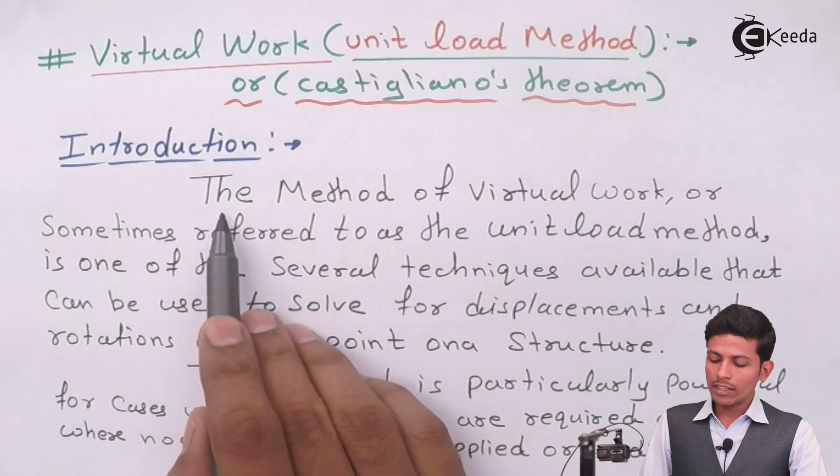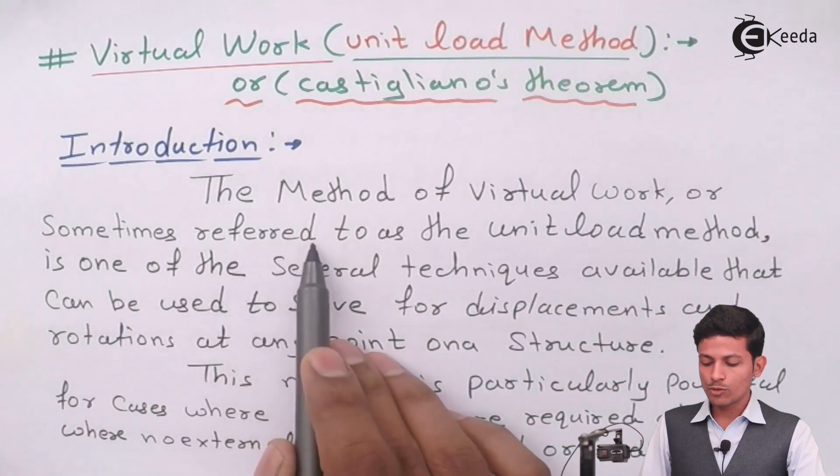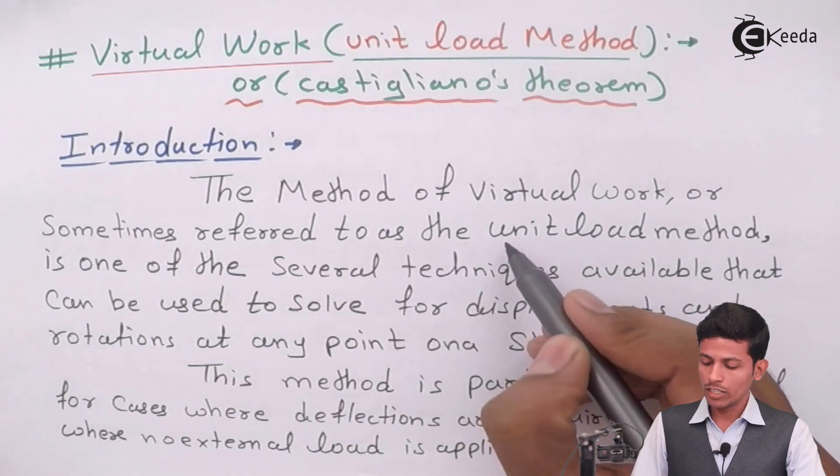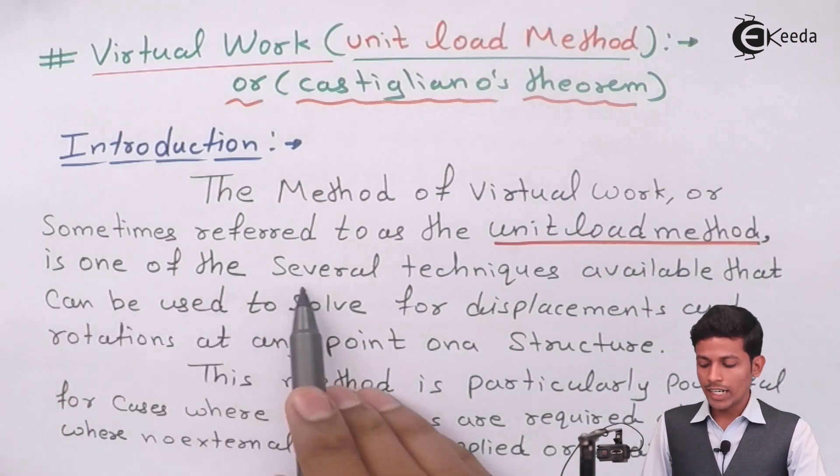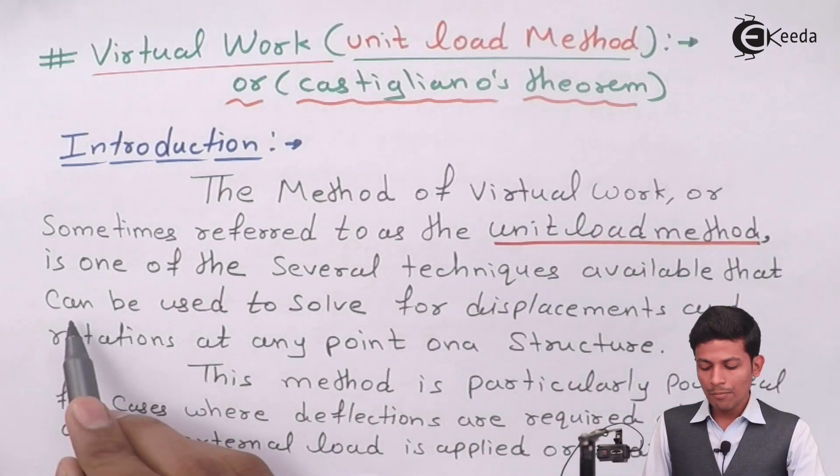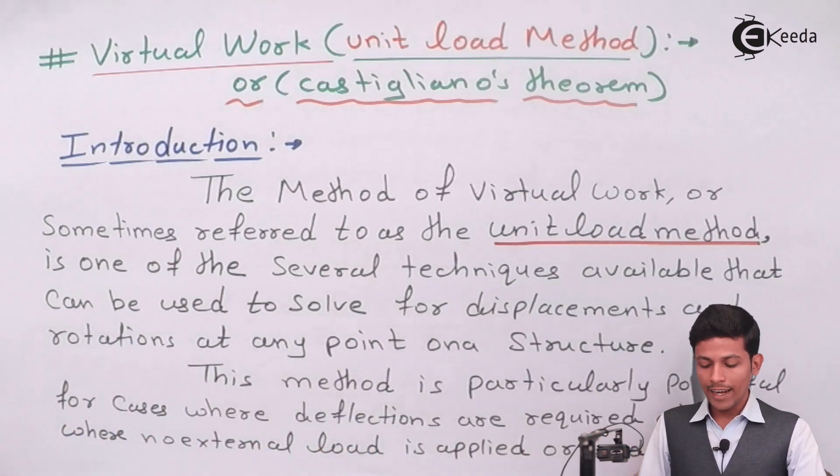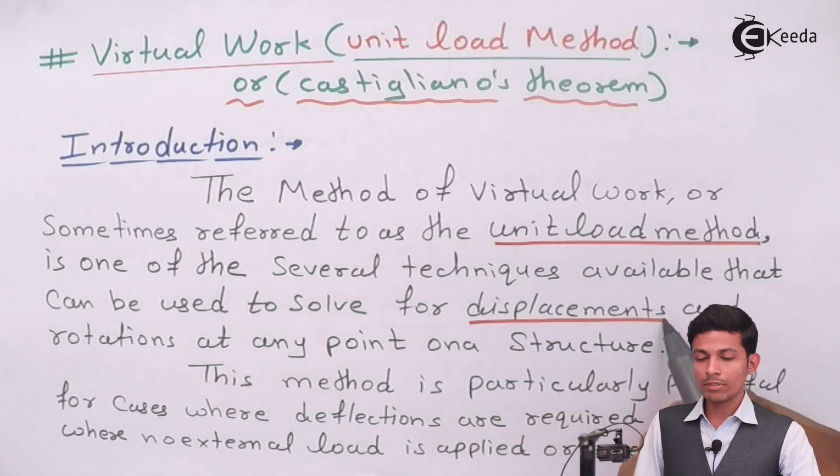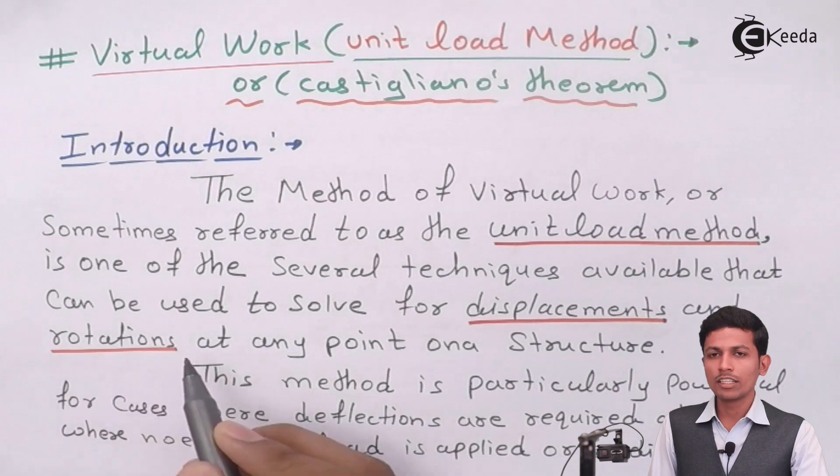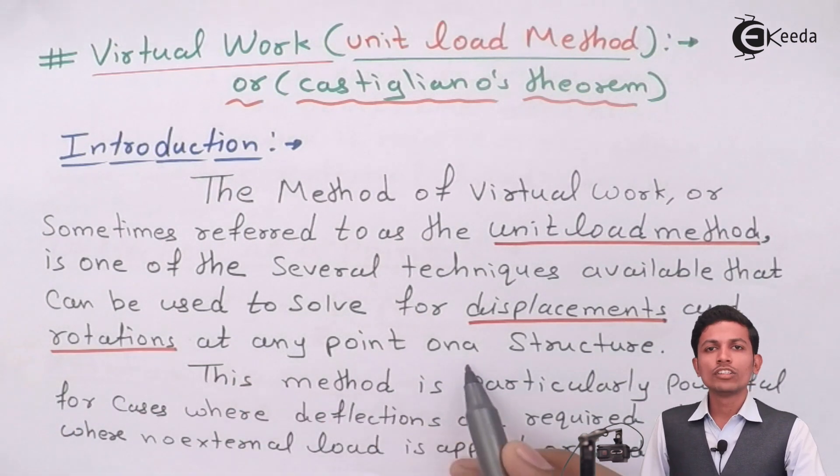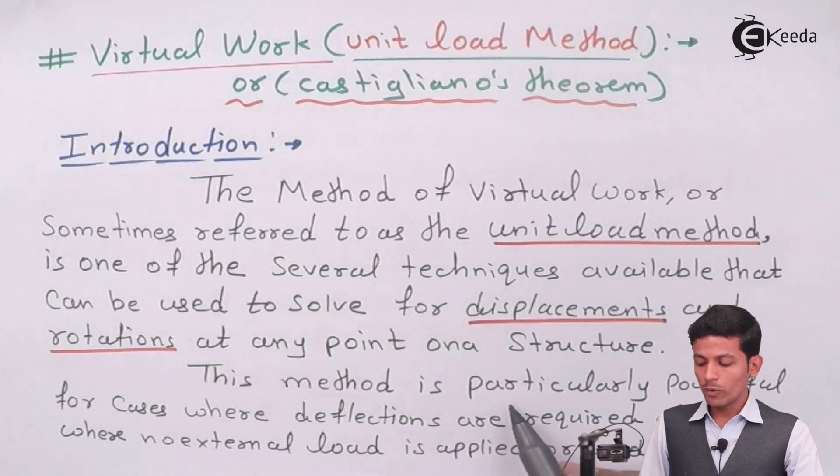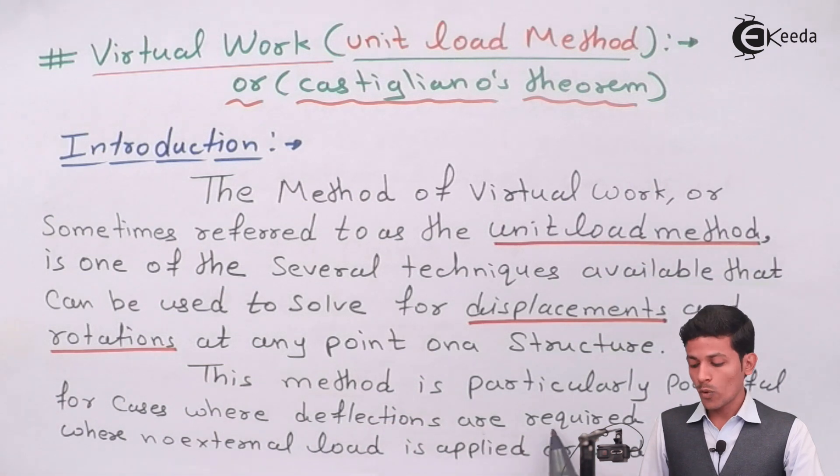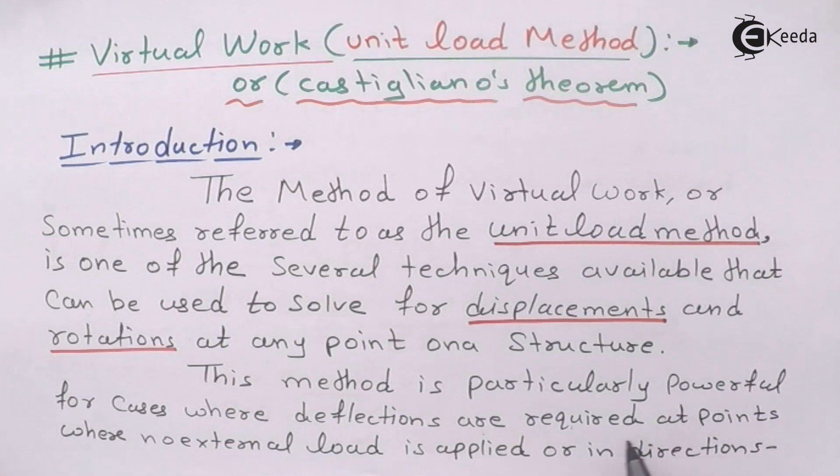The method of virtual work or sometimes referred to as a unit load method is one of the several techniques available that can be used to solve for displacement and rotation at any point on a structure. This method is particularly powerful for cases where deflections are required at point where no external load is applied.